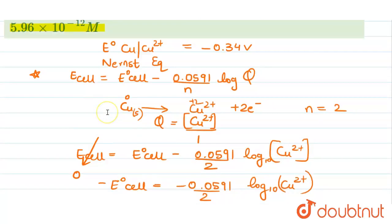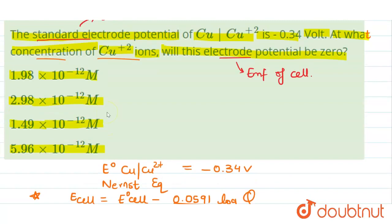Now which option is suiting over here? First option is far away, second option is very near, third option is also far and fourth option is also very far. So the correct answer is option B, 2.98 × 10⁻¹² molar.